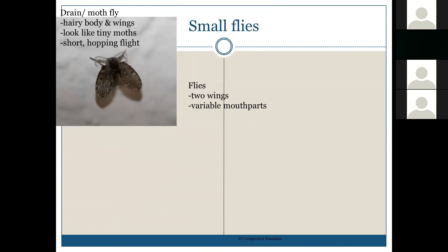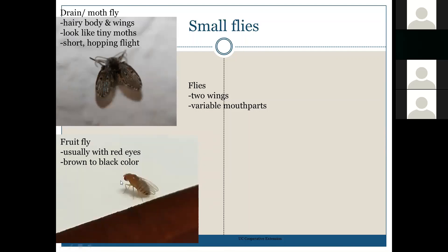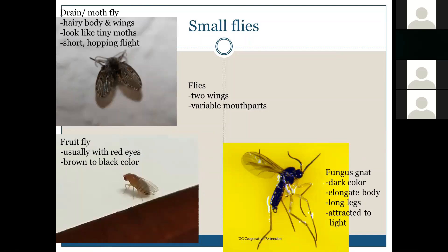Fruit flies are usually brown to black in color and typically have red eyes. Fungus gnats are dark in color with really long legs and fairly long antennae. They have an elongated body and are attracted to lights. You will often find these around potted plants because their larvae live in the soil, and fungus gnats will emerge from potted plants that have been over-watered.